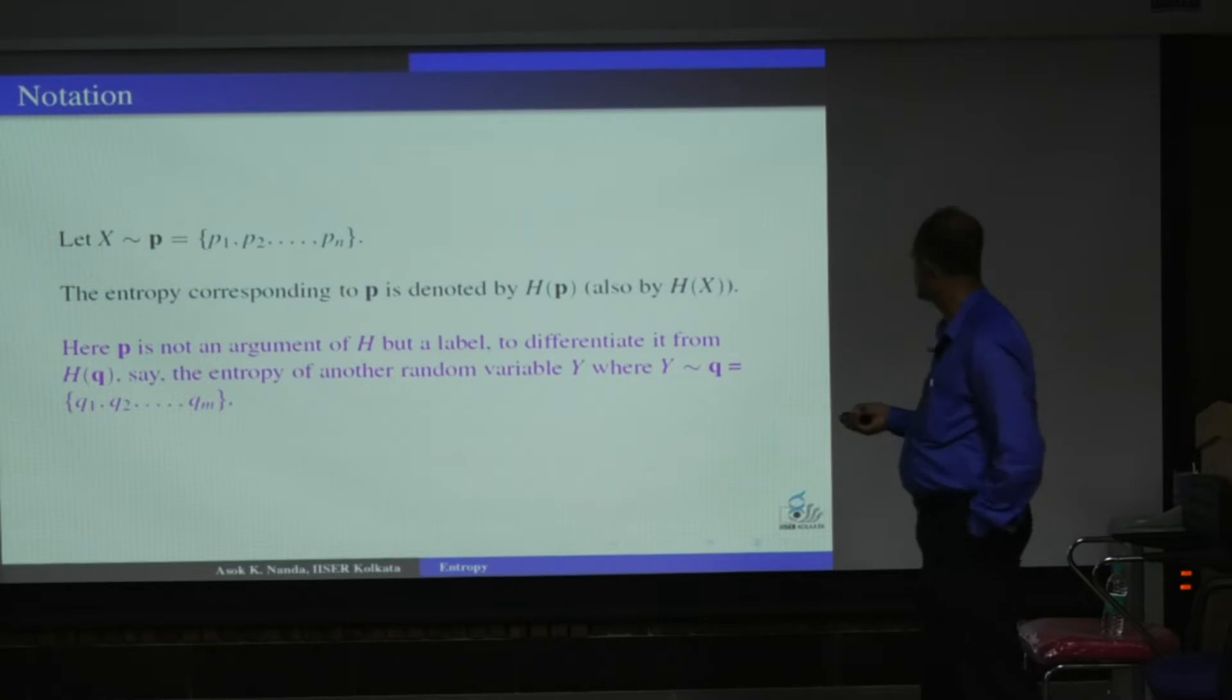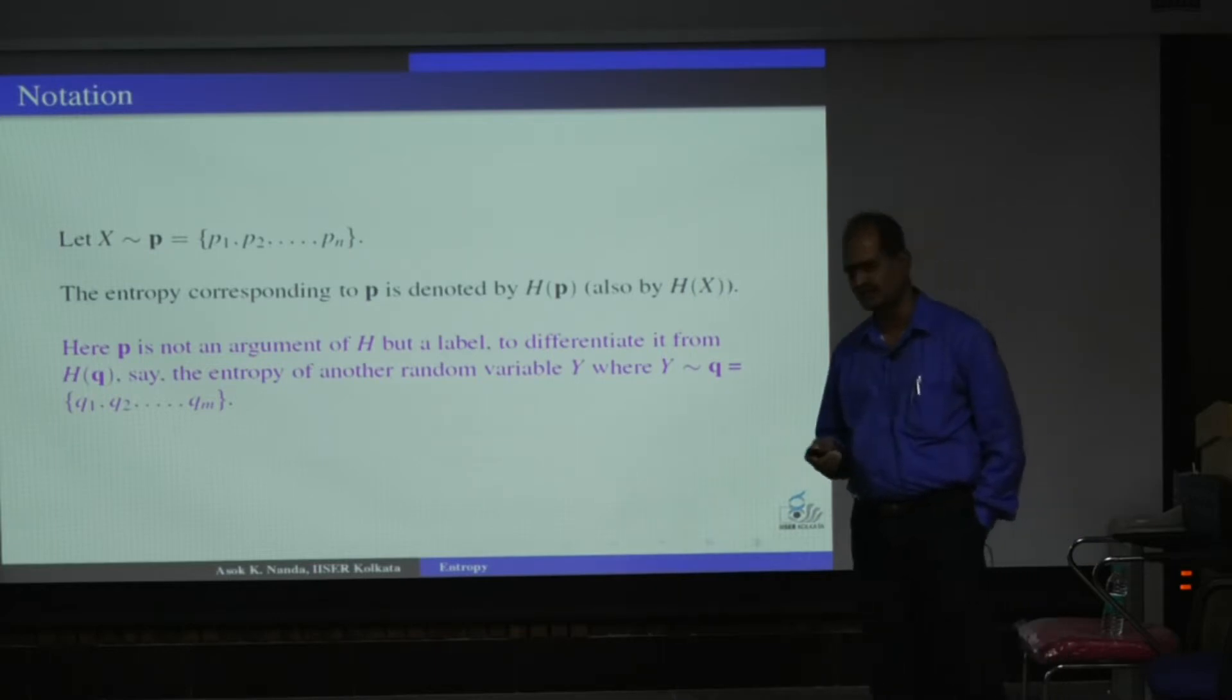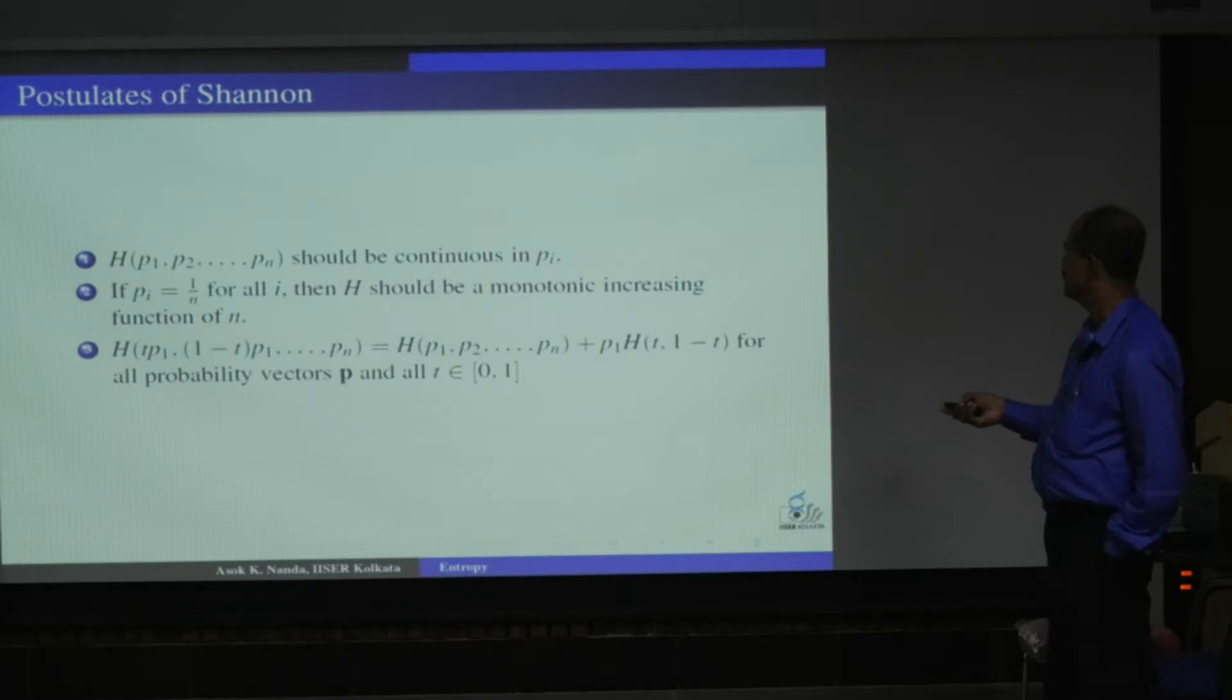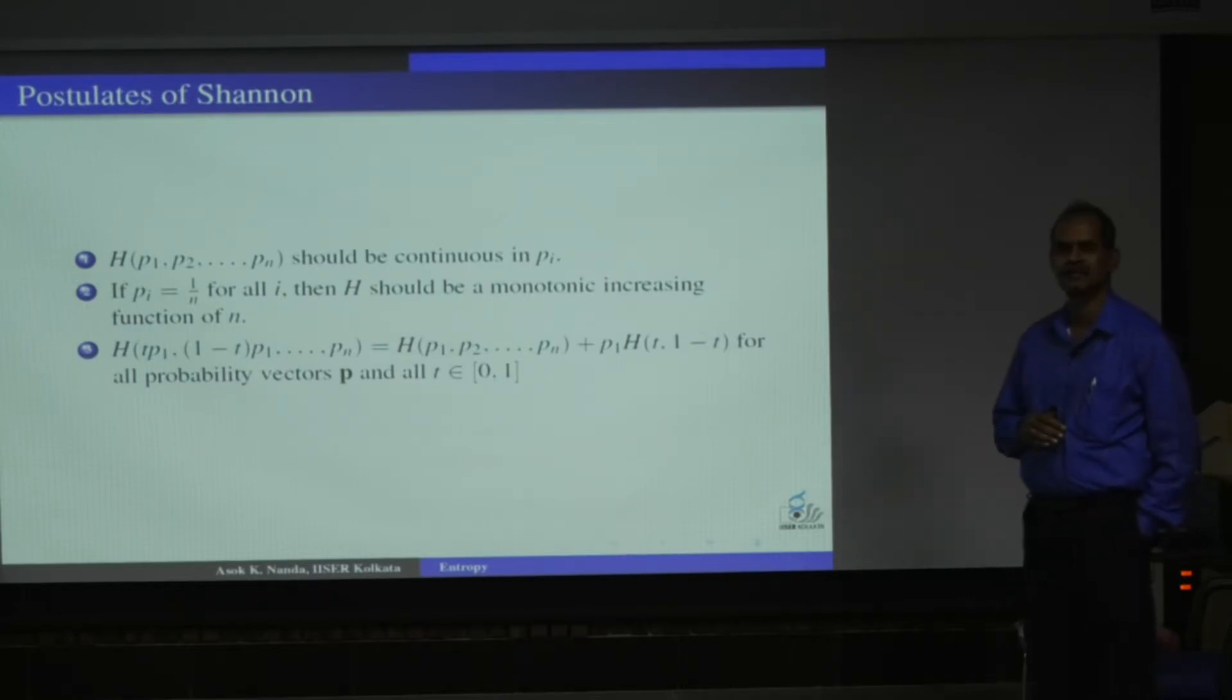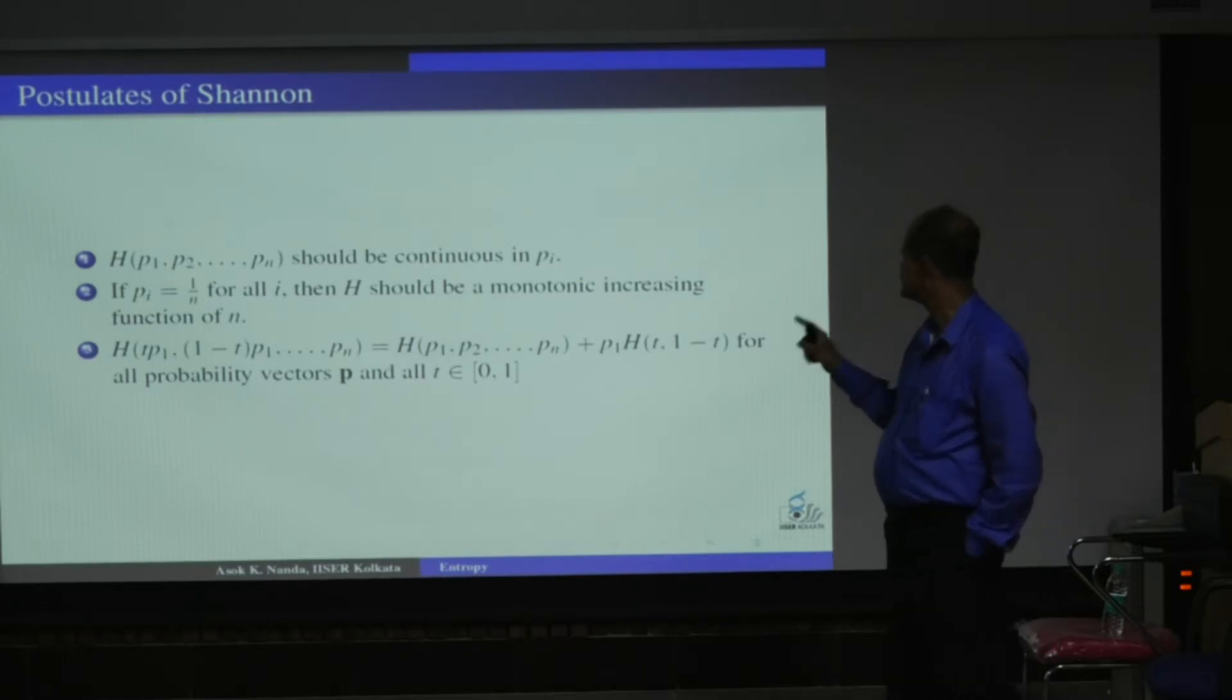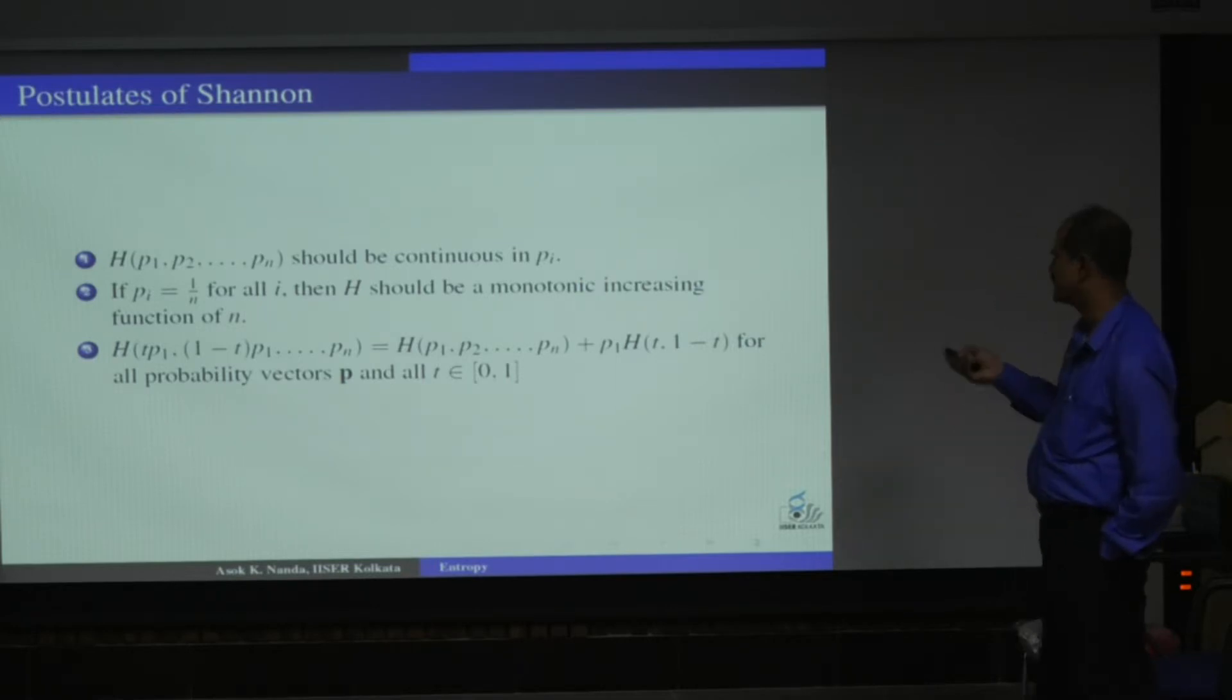This is an important thing before you proceed. The thing is that whenever you say H(P), this is actually not the argument. This is, because whenever I have some other distribution H(Q), then I will write H(Q) here. So that's what we have written here, that it is eventually a label and not the argument. So these three things eventually, you have seen that I started with a couple of reasonable axioms, but eventually Shannon started with these three things. These are eventually Shannon's axioms, and then they derived Shannon's entropy.